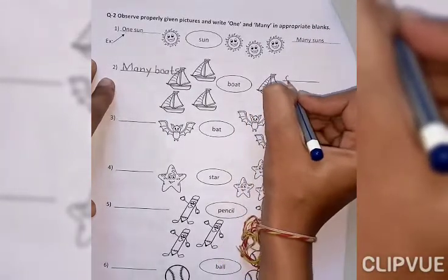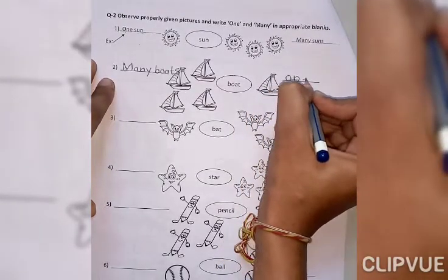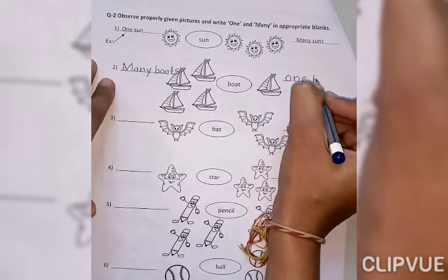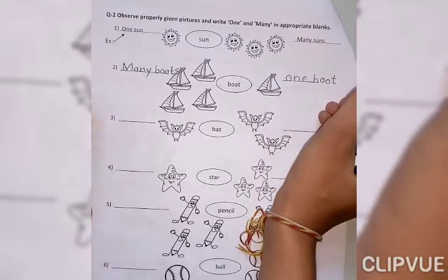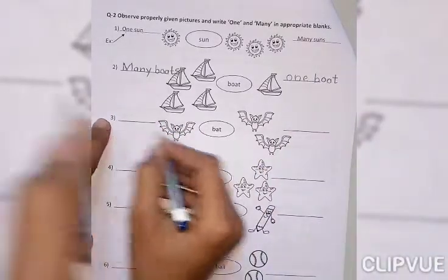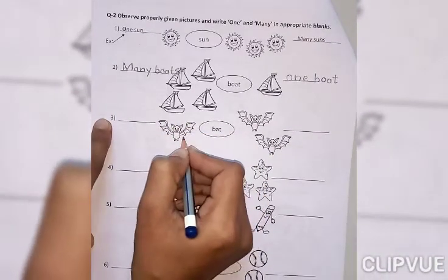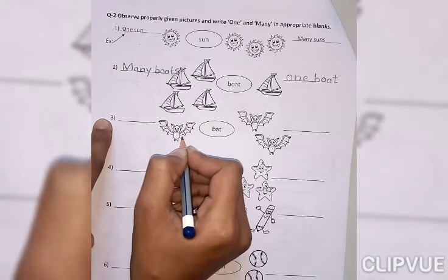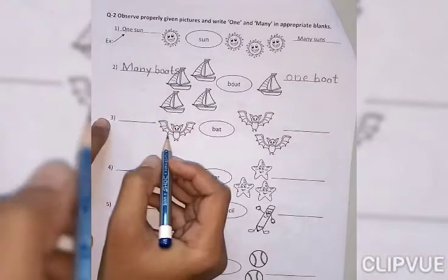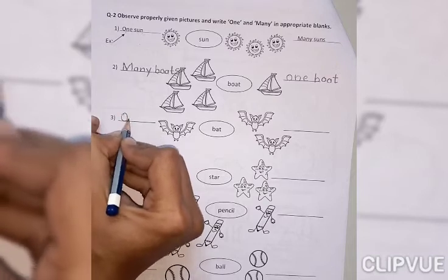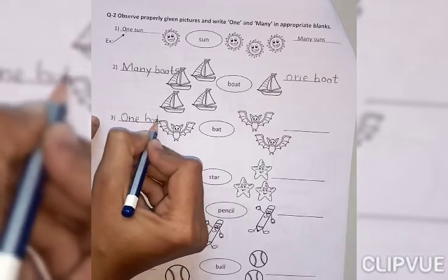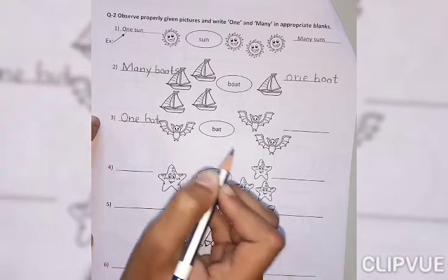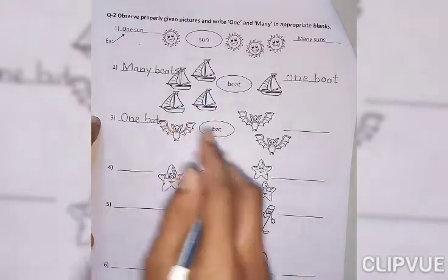And here only one boat. That's why we write here O-N-E. One. B-O-A-T. Boat. Now, what is this? Bat. How many bat is here? One bat is here. So, we write here O-N-E. One. And B-A-T. Bat. यहाँ पर S लिखेगे हम? नहीं लिखेगे. Because this one is only one.